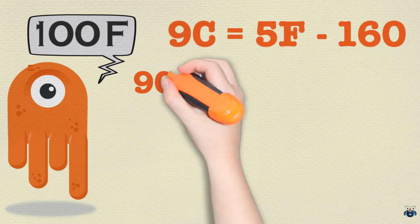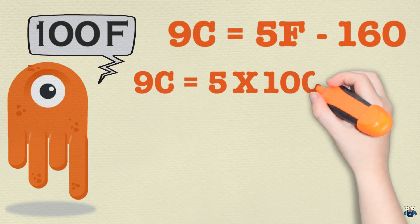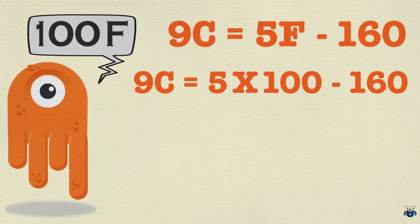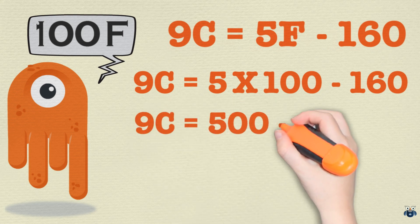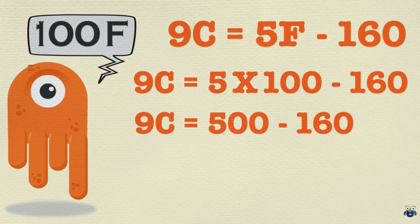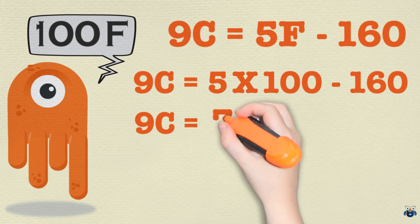That gives us 9C equal to 5 times 100 minus 160. Or 9C equal to 500 minus 160. Now 500 minus 160 is equal to 340. So we have 9C equal to 340.